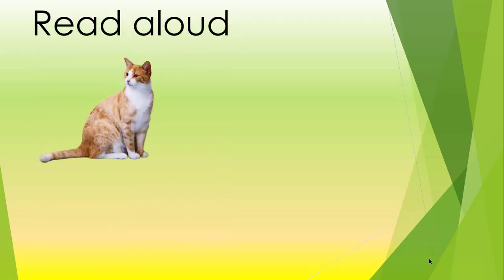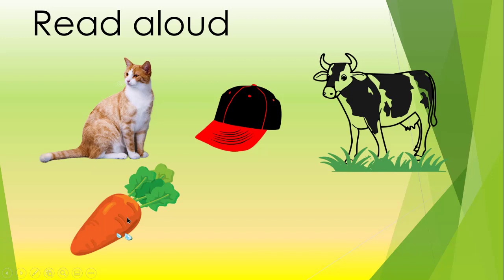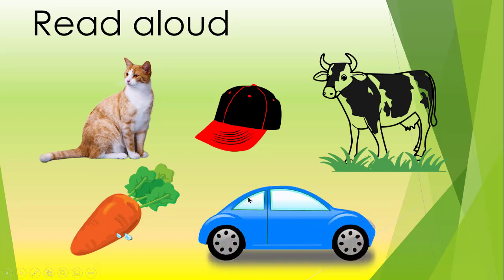Okay, let's read the words with C: cat, kept, cow, carrot, car. Let's read again — read after me: cat, kept, cow, carrot, car.